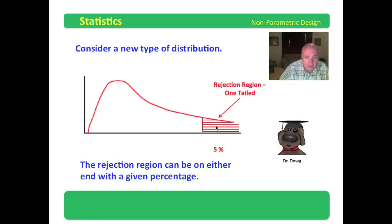A rejection region can be on either end. Here I put the rejection region out on this side, and the rejection region in the one tail is, say, 5%. If the data fall out here, we'll reject them. The 5% could be over on this side if we chose to.